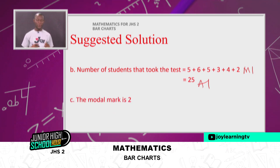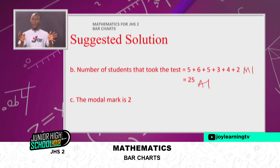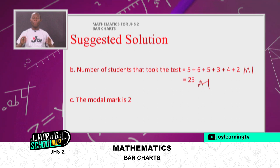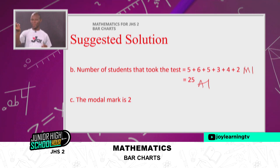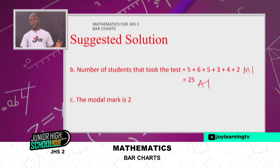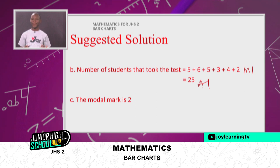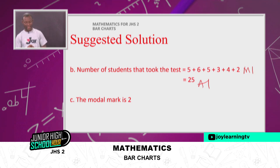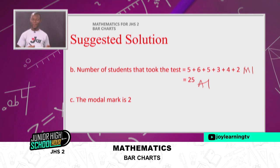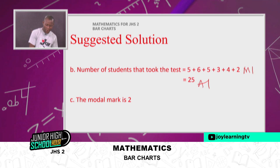We're also asked to find the modal mark. When we say mode, it talks about the highest frequency — in other words, which mark did the most people get? The word that signifies mode is 'most'. Looking at the diagram and the bars we have drawn, the bar for mark 2 is the highest — six students got 2, which was more than any other mark. So the modal mark is 2.